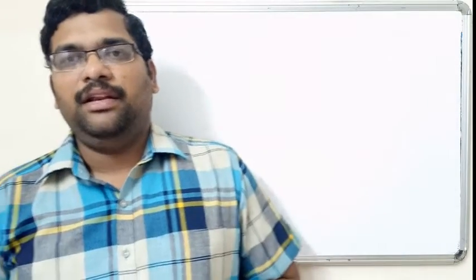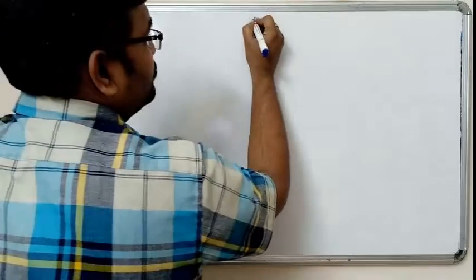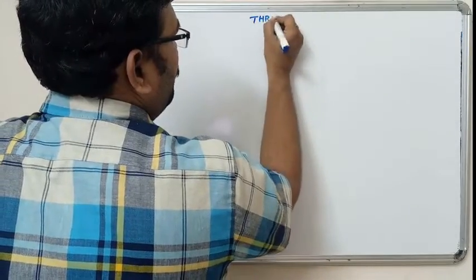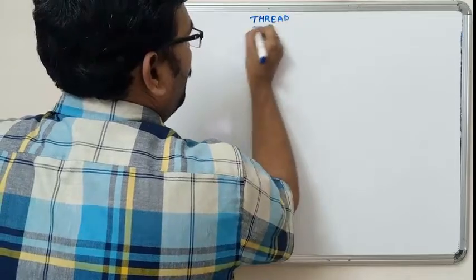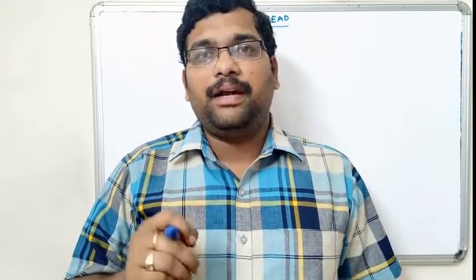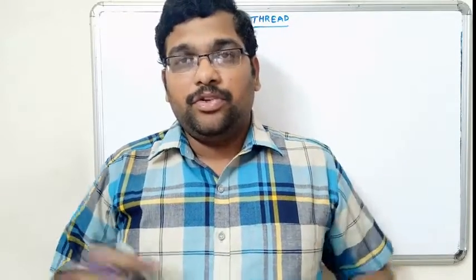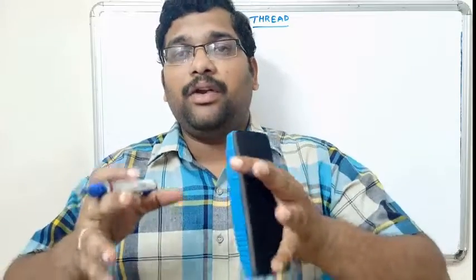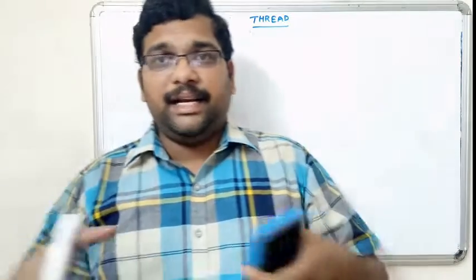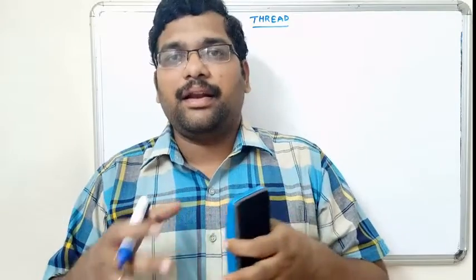Hello friends, welcome back to our channel. In the previous session we saw the difference between multi-threading and multi-tasking. From this session we will start the thread concept. A thread is a lightweight process and it is an individual part of a running program. A group of threads working combinedly is called a program, and all these threads work concurrently.